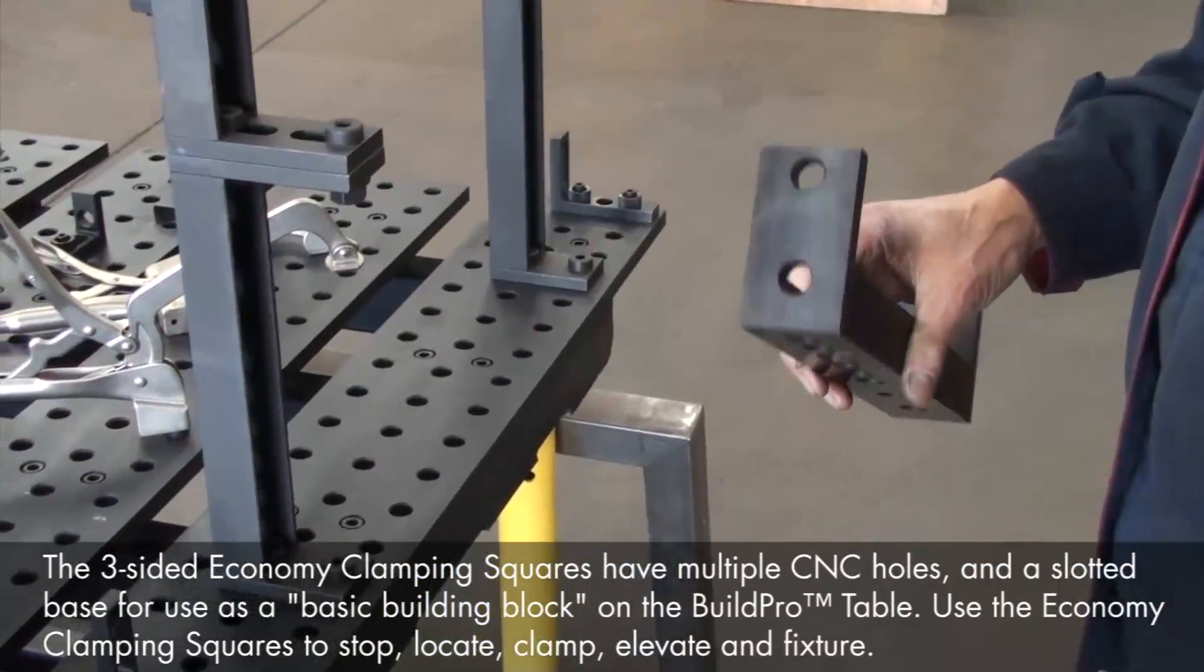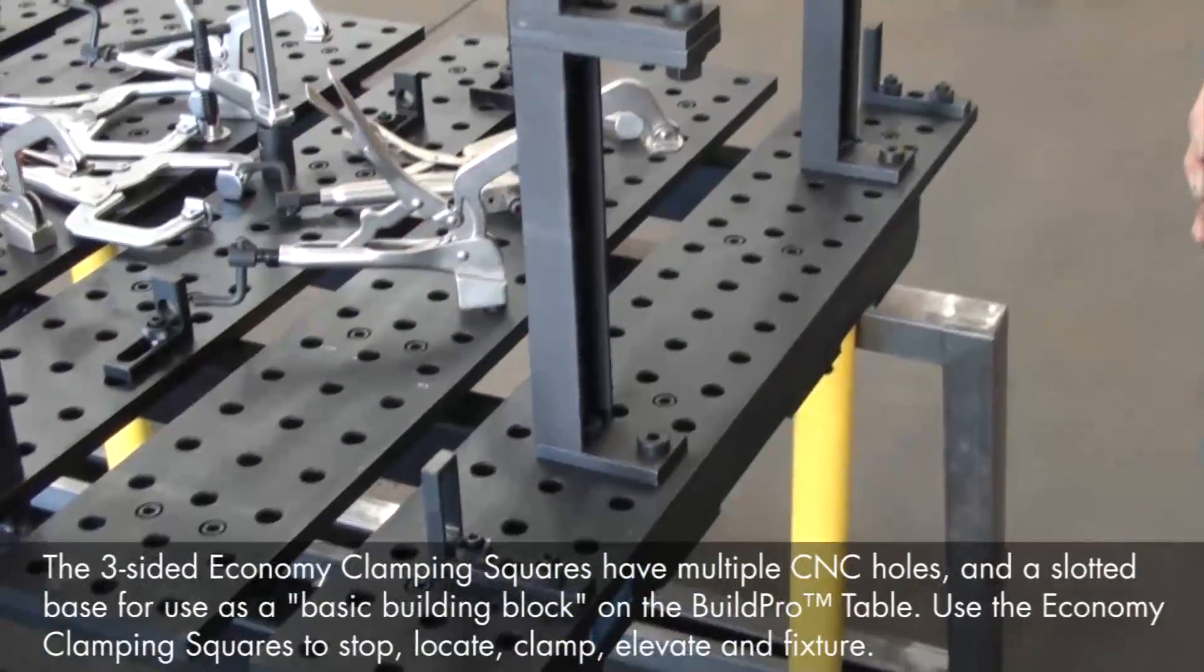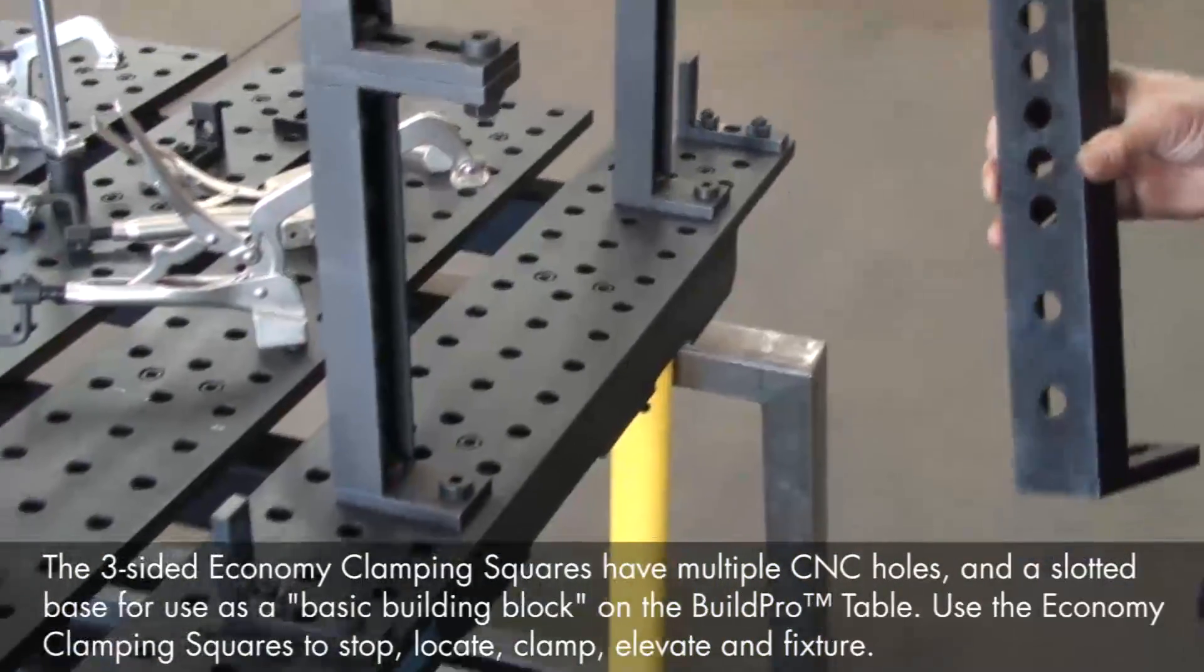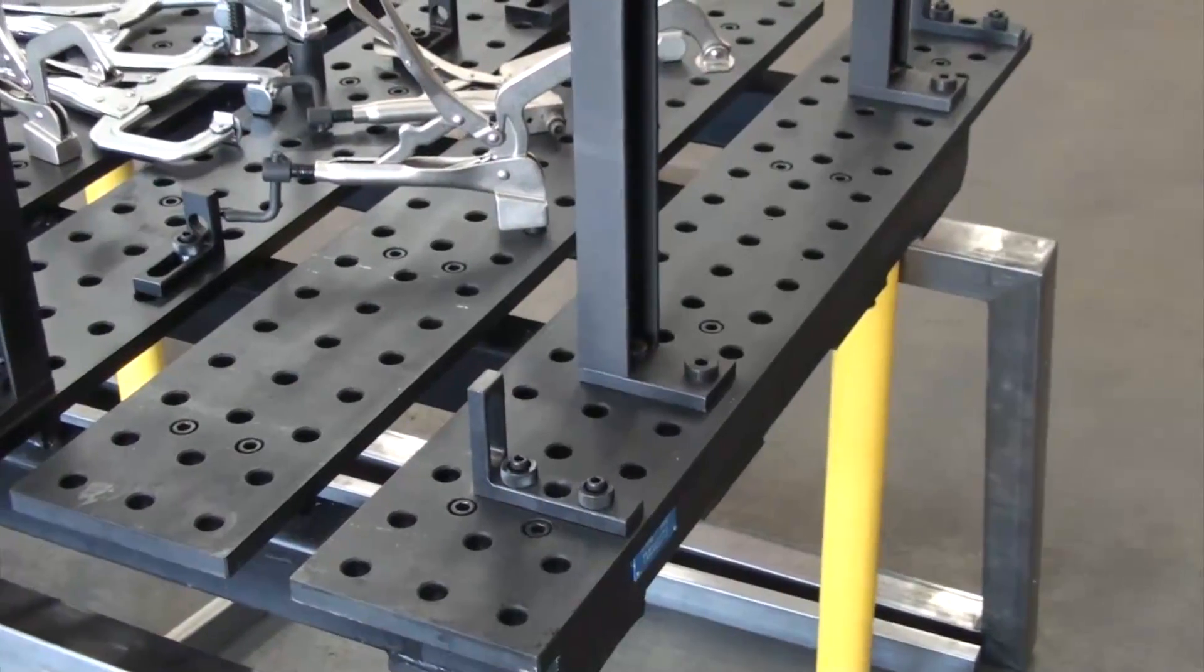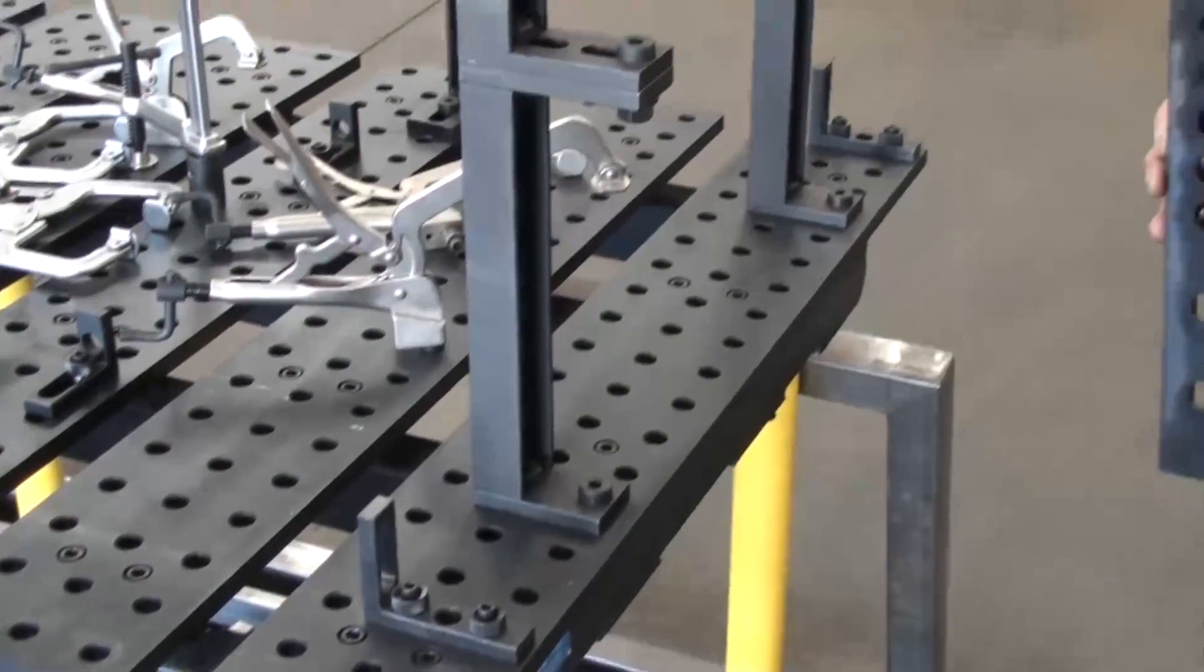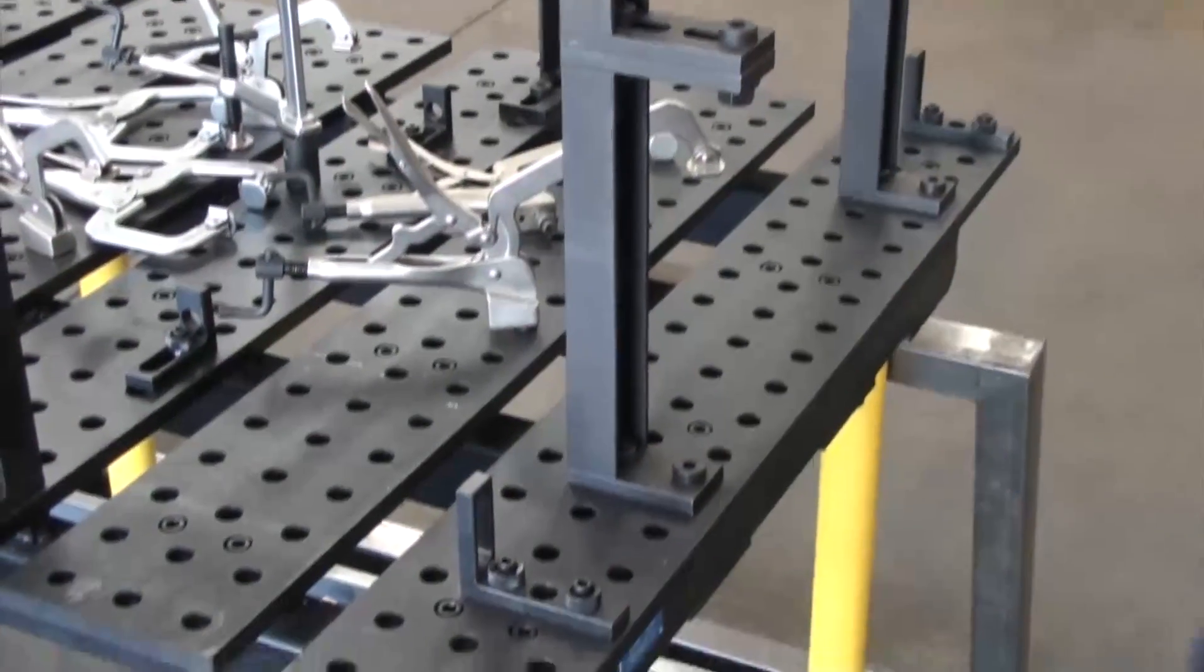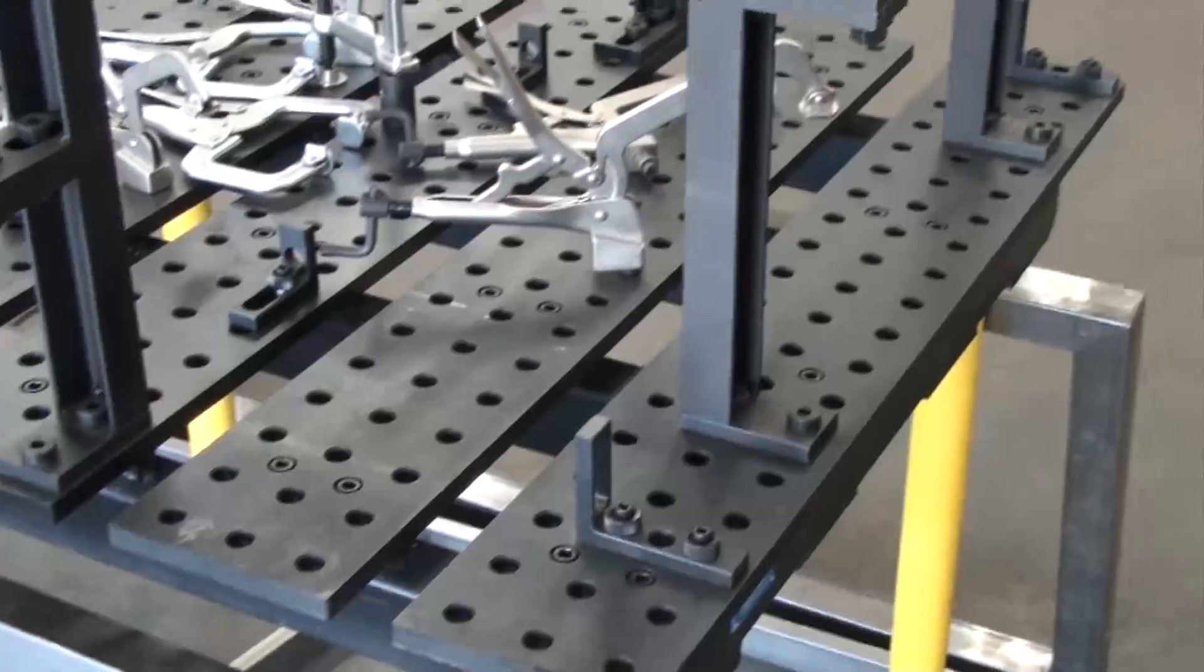Because we want to use these first Economy clamping squares in a fixed, accurate location, we're going to mount the square using the 5/8 hole. We're going to use the BuildPro tabletop holes as our guide in setting up the Economy clamping squares. The tabletop holes are set in a precise 2-inch grid pattern, so we're going to come in two rows from the table edge to place our first clamping square.